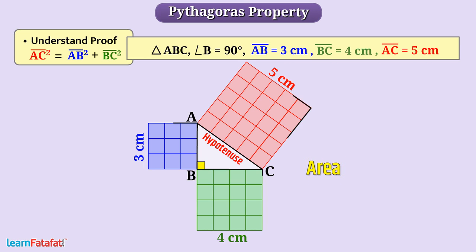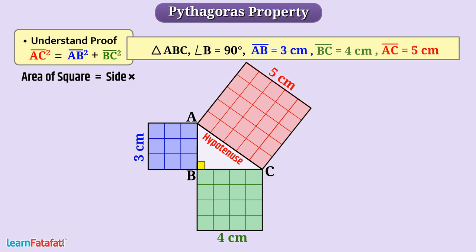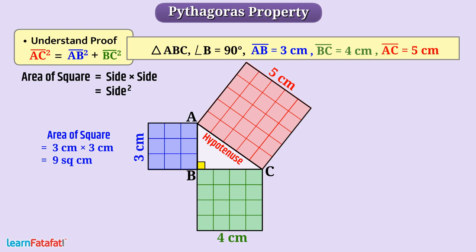Let's find the area of these squares. We know that the area of a square is side multiplied by side, which we write as side squared. So the area of the square with side 3 cm is 3 cm multiplied by 3 cm, that is 9 square cm.